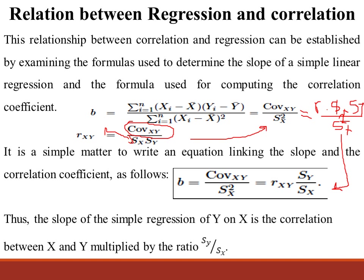And we know that the correlation coefficient r, denoted by r, equals the covariance of x and y divided by the standard deviation of x and the standard deviation of y.